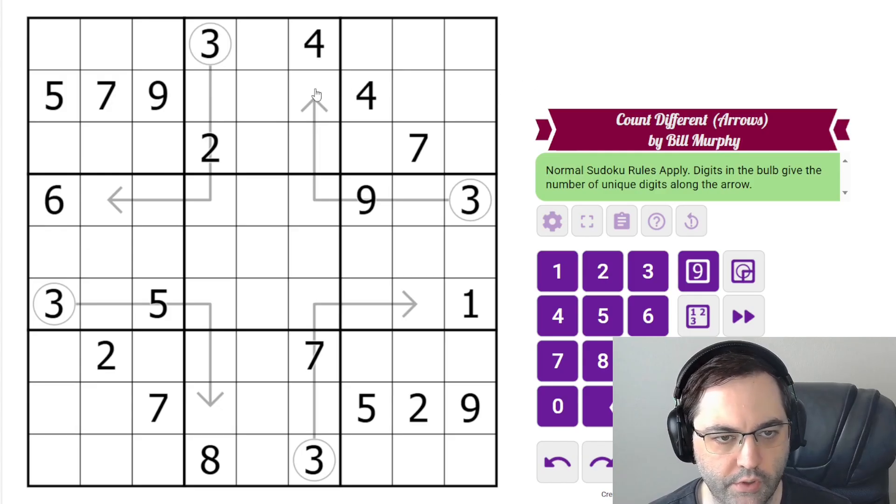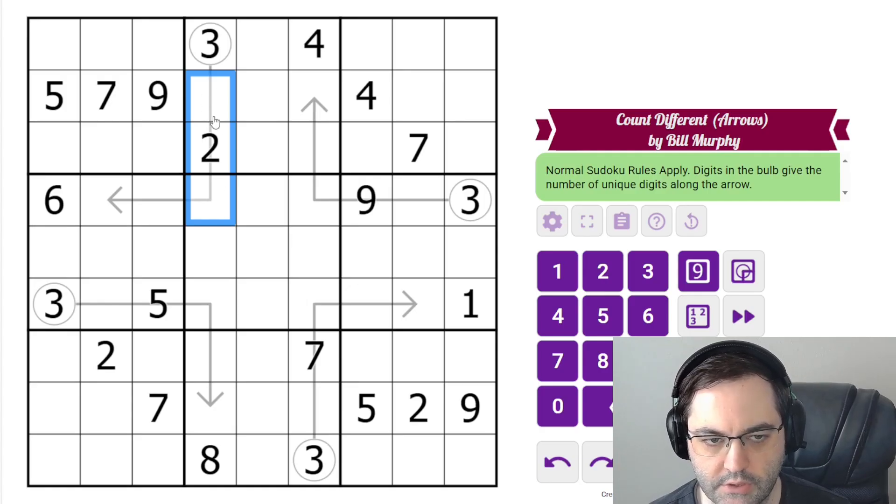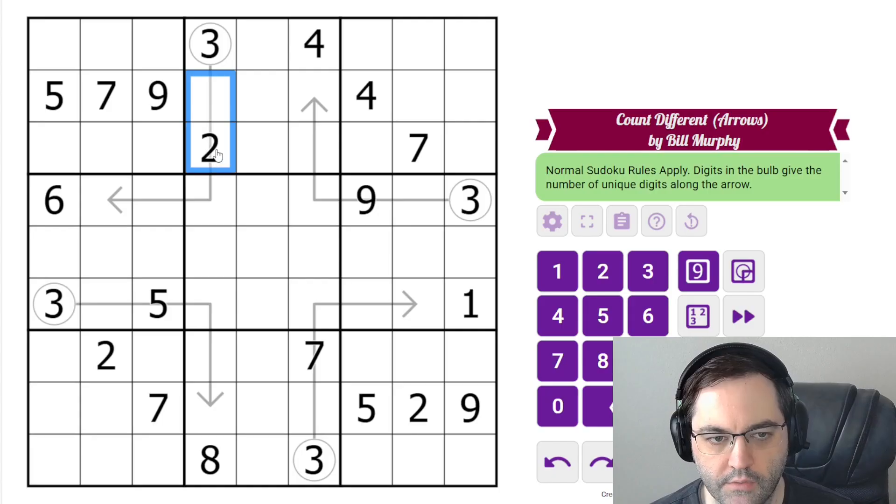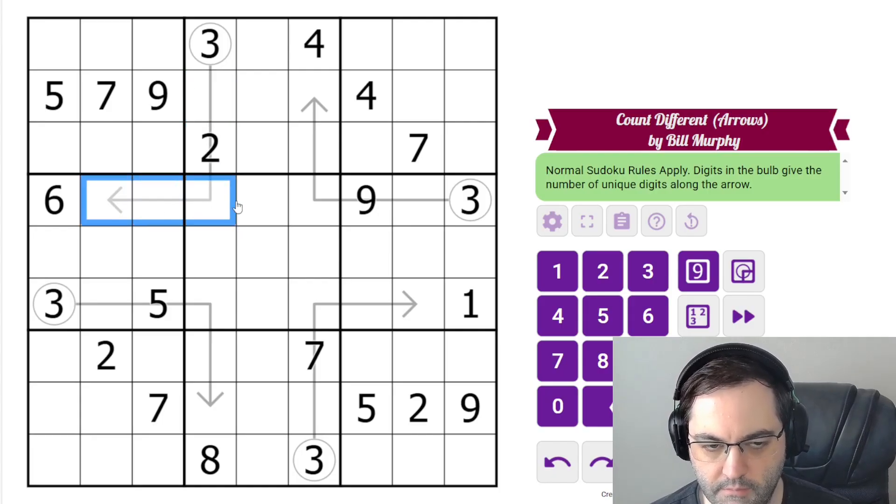And we'll get started by noticing that there are three distinct digits that have to go in these three cells because they're in the same column. So these are going to be our distinct digits, as are these.